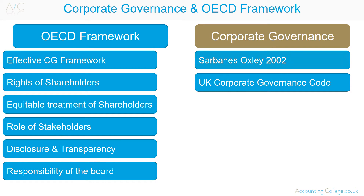In the US you have the Sarbanes-Oxley Act of 2002, which is a rules-based approach. It provides a set of strict corporate governance laws for organisations to follow. In the UK you have the UK Corporate Governance Code, which is a principle-based approach. It provides a set of best practices for organisations to follow.